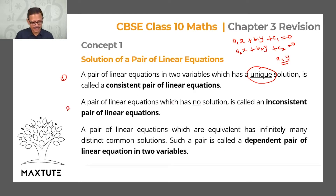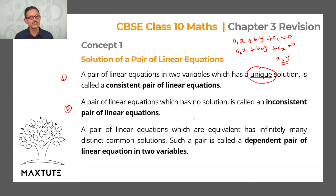There is a second variant: a pair of linear equations need not have a solution at all. A pair which has no solution is called an inconsistent pair of linear equations.